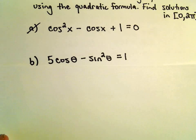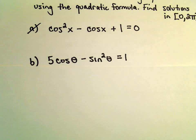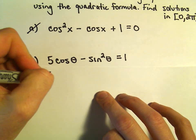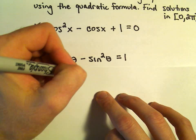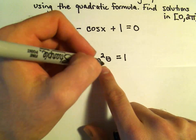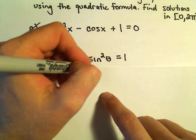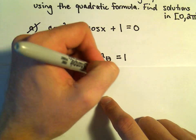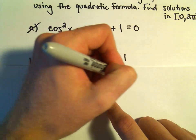I'm going to turn this into an equation involving only cosine theta. Recall there's the identity that sine squared theta plus cosine squared theta equals 1, so equivalently that would say that sine squared theta equals 1 minus cosine squared theta.